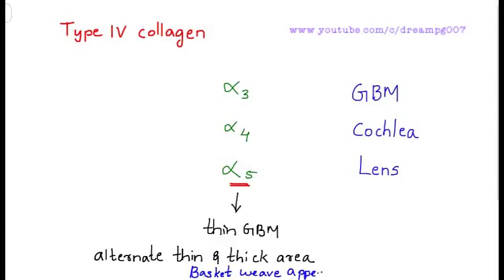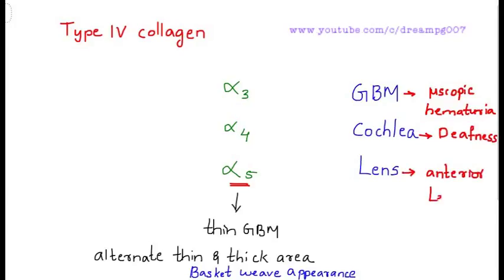Defect in glomerular basement membrane can lead to microscopic hematuria, which is the first feature. Defect in cochlea leads to deafness. Defect in lens leads to anterior lenticonus. These three form a triad in Alport syndrome.